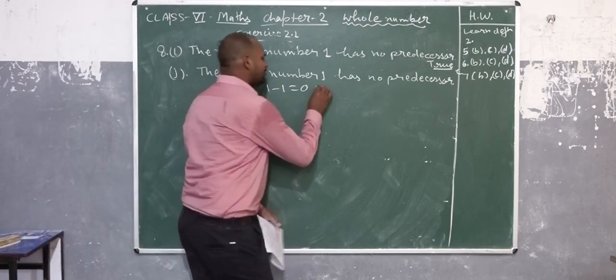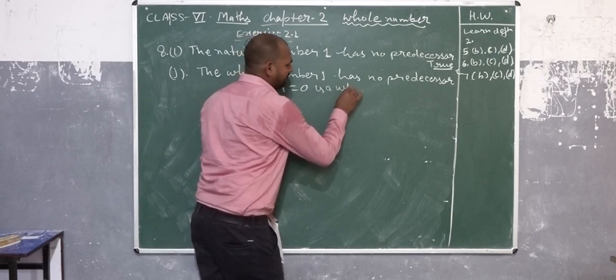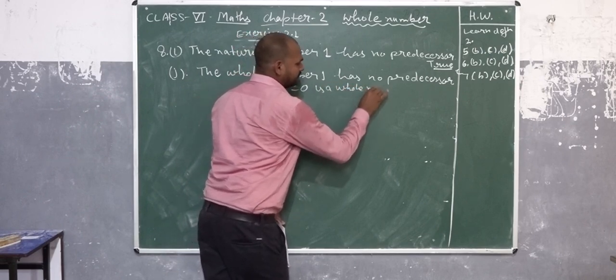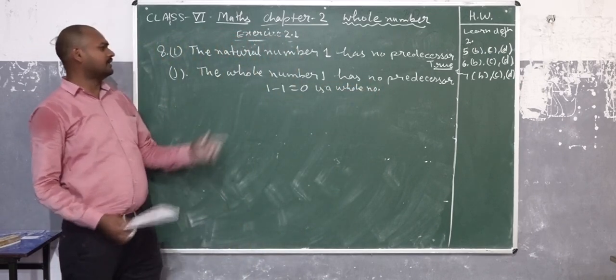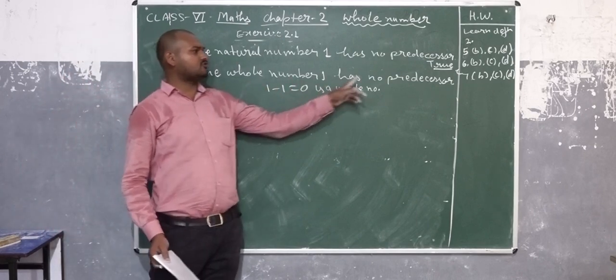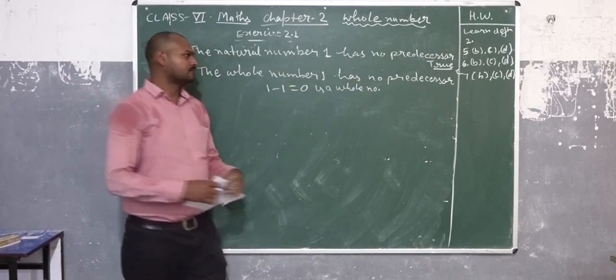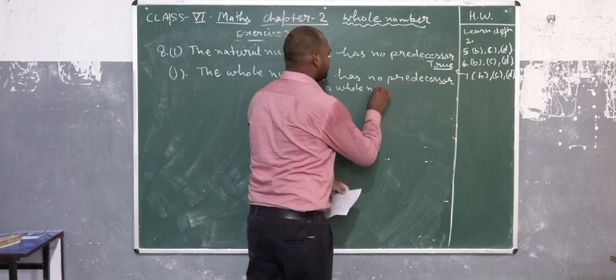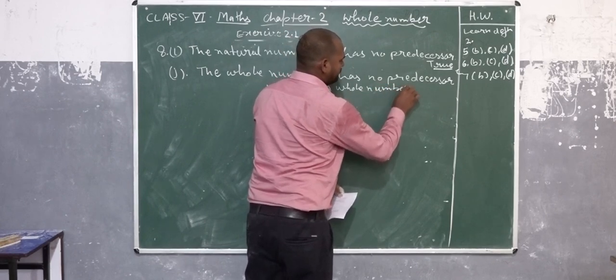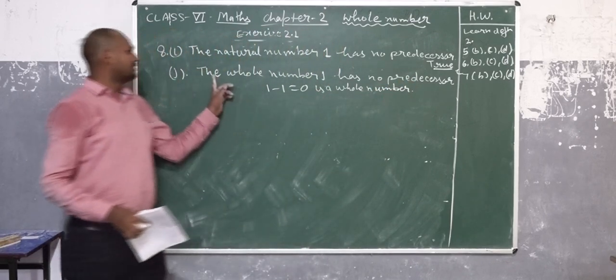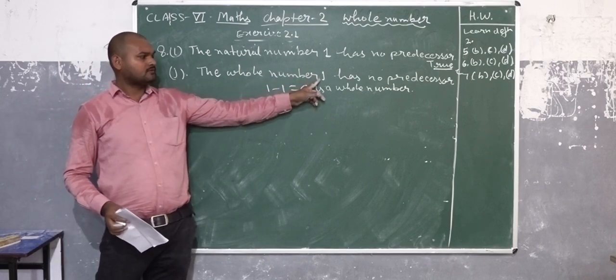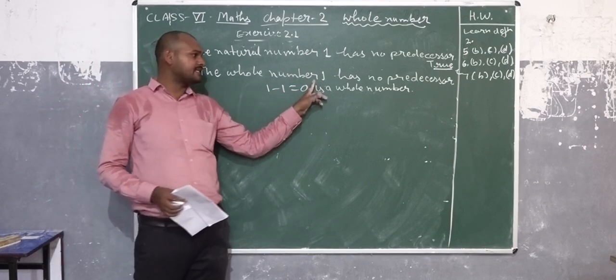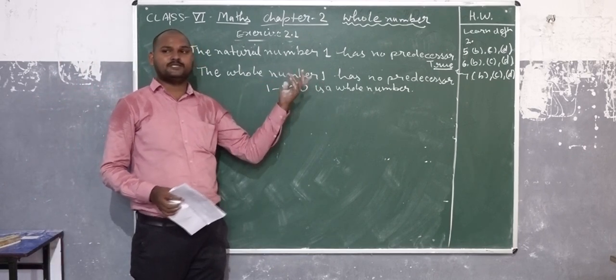Here zero is a whole number. The whole number has no predecessor. Four, none. The whole number has one. One is the whole number. I am asking in this statement, one has no predecessor.